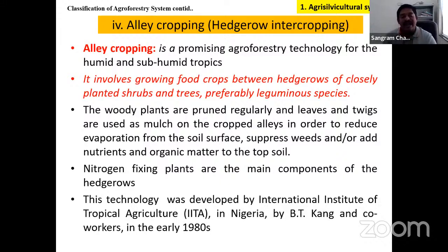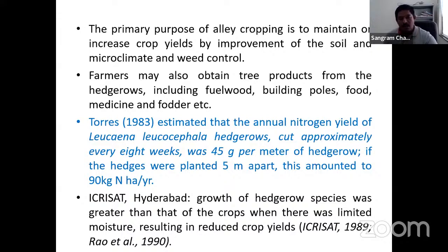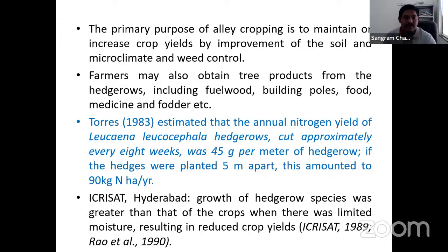In India, majority of alley cropping research is carried out at ICRISAT, located in Hyderabad. In alley cropping, trees are planted east to west with spacing between rows of 4–8 meters, and dense within-row spacing. The spaces between rows (called alleys) are where crops are grown. Ideal tree species for alley cropping should have sparse canopy, permit sunlight for agricultural crops, resprout after repeated pruning, and have deep root systems so as not to compete with crops for moisture and nutrients.